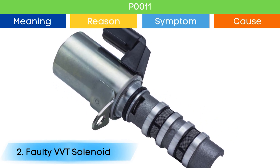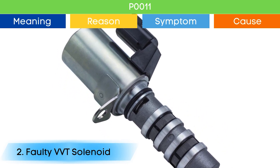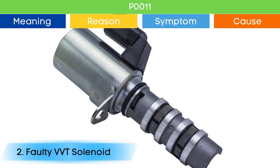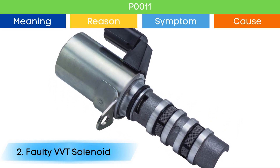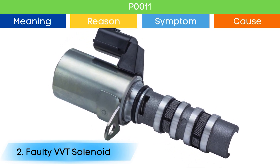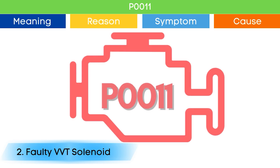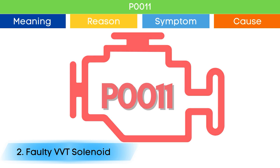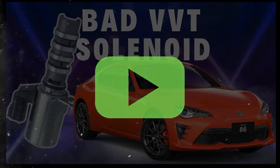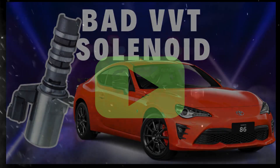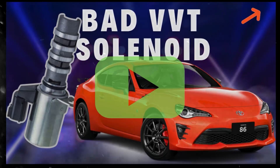Cause number two: Bad VVT solenoid. Due to a bad VVT solenoid, the camshaft position advance and delay may not work properly, which may trigger P0011 and other OBD-II codes related to the VVT solenoid, along with symptoms of a bad VVT solenoid. Check our detailed video to learn more about the symptoms of a bad VVT solenoid and related OBD-II codes.